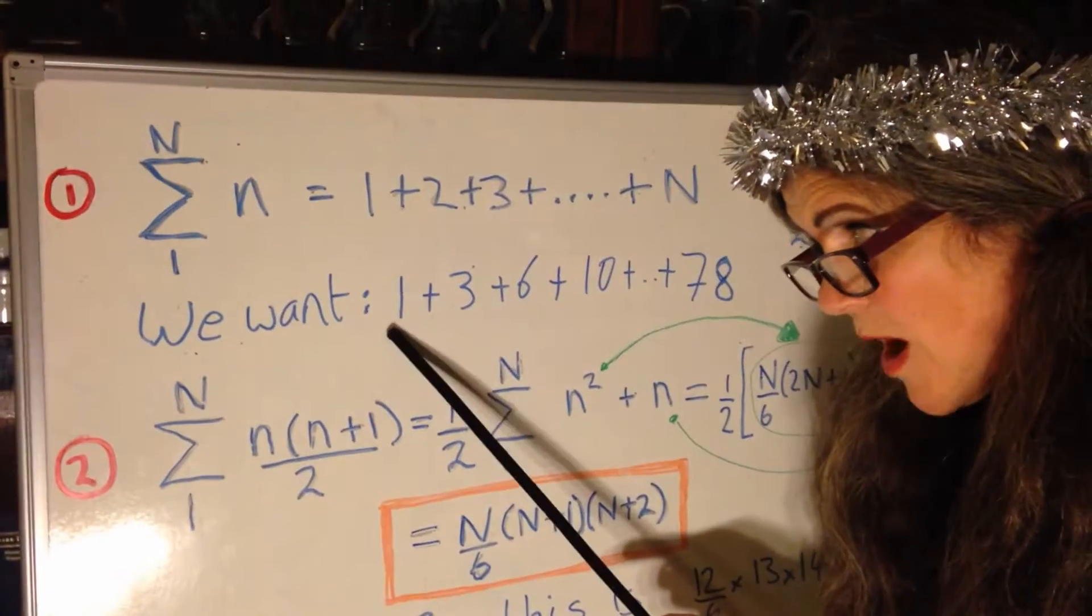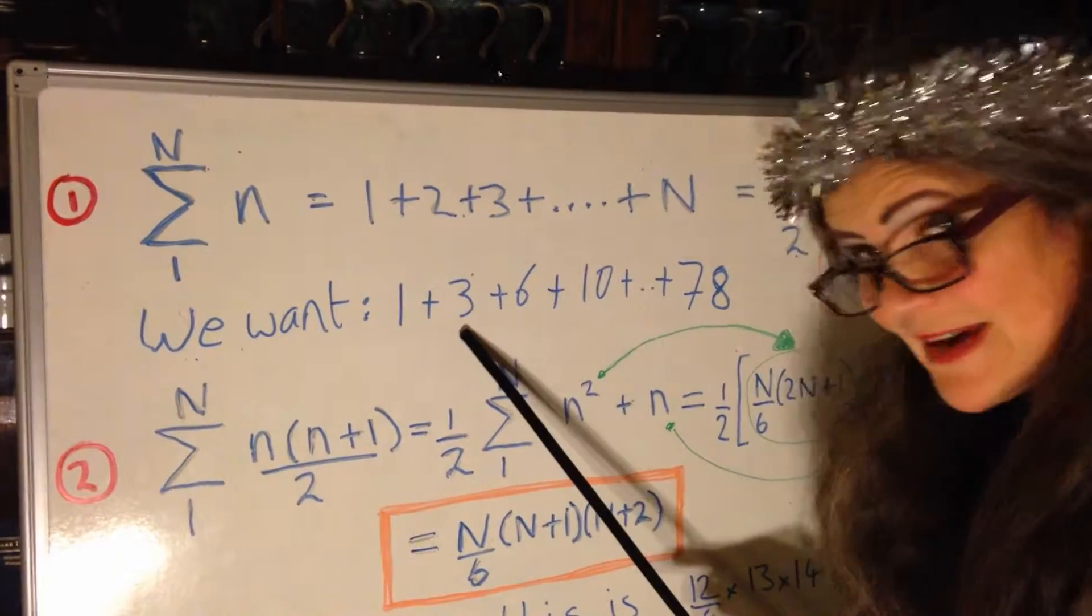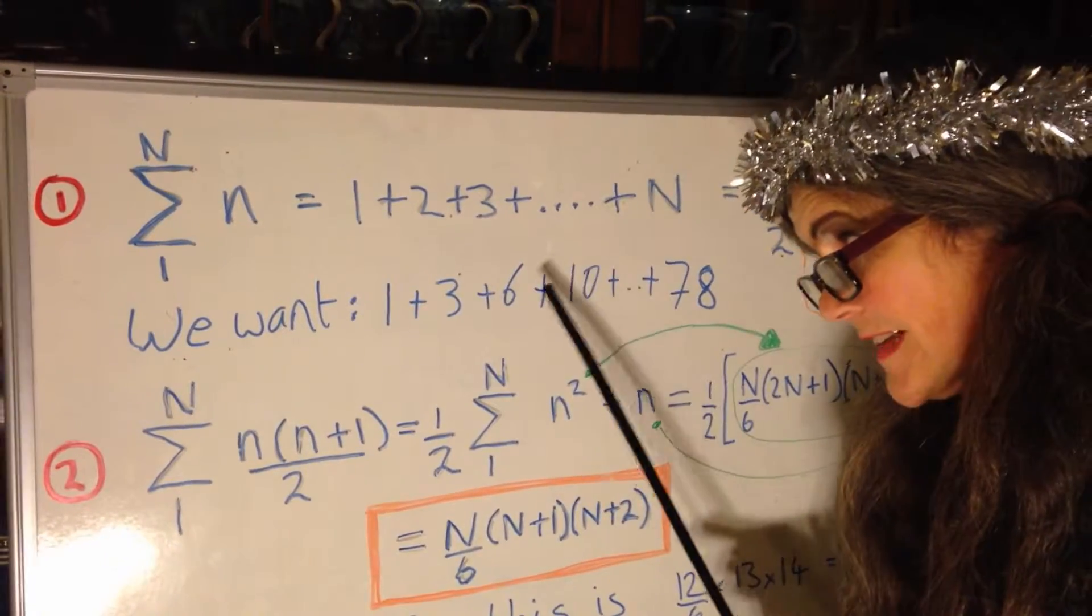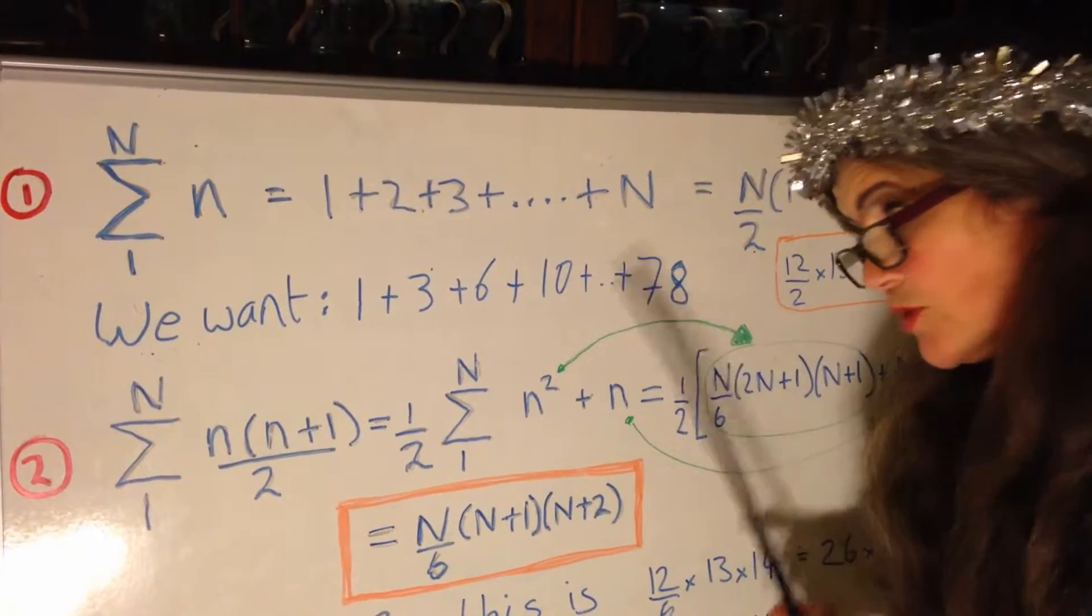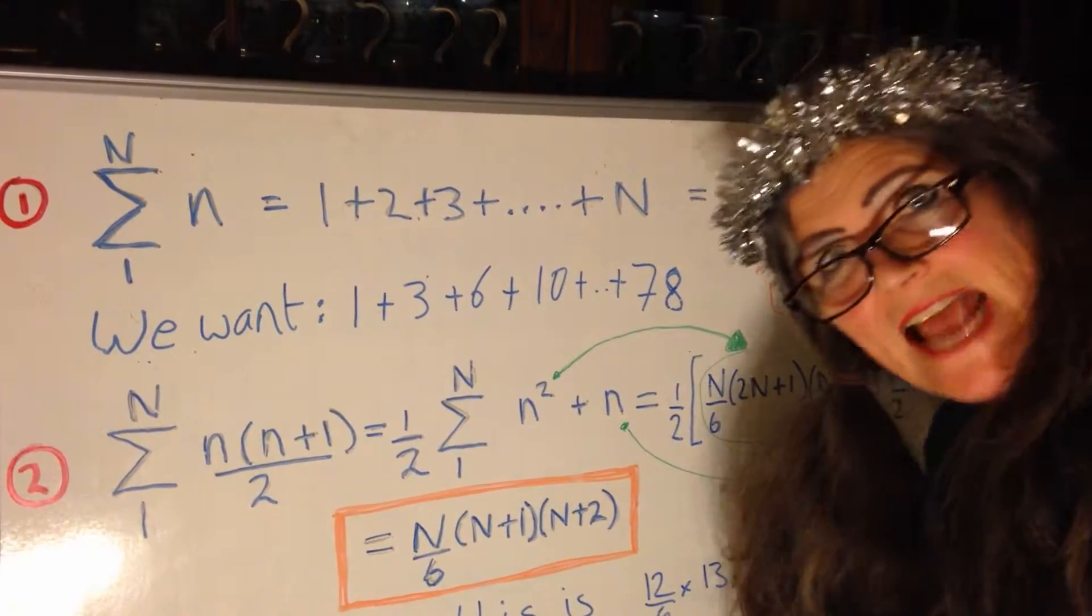On the first day of Christmas we get one, on the second day we get three, that's two plus one, on the third day we get six, that's one plus two plus three, and so on, all the way up to twelve when we get seventy-eight.